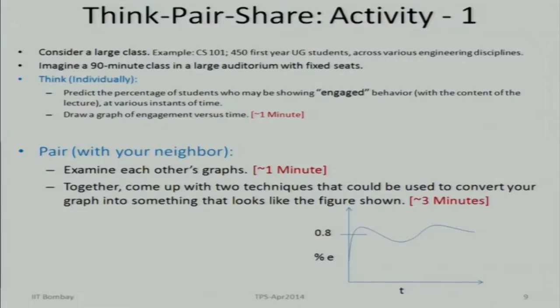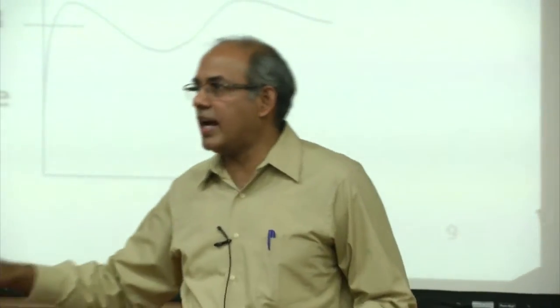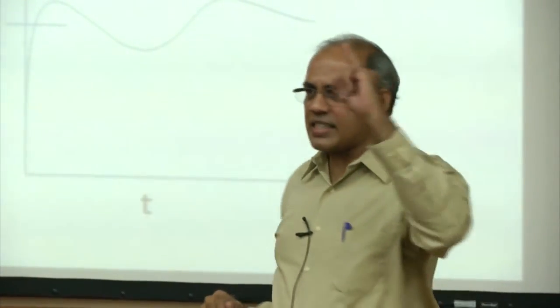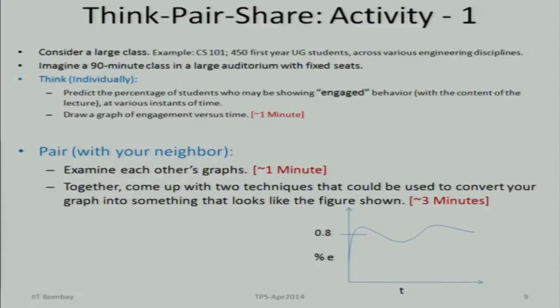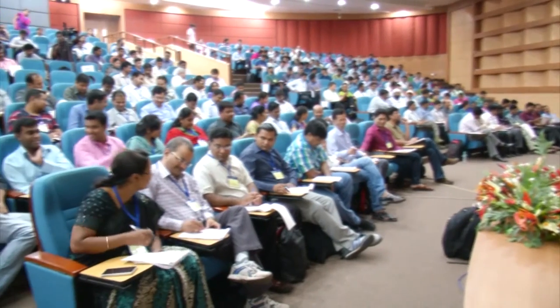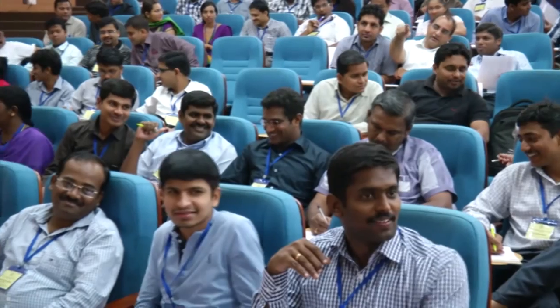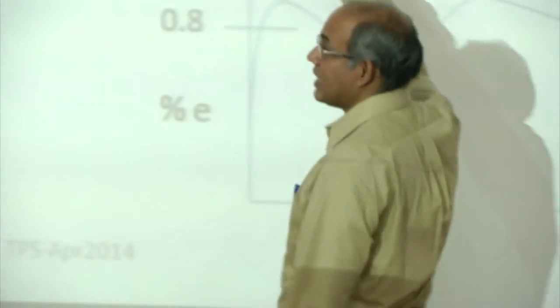Okay, that's the think phase — you've done your own thinking about how the graph of students' engagement versus time is going to look. Now let's move to the next phase. Whoever is sitting next to you — right side, left side, no rule — examine each other's graphs: what was your thinking that led to your graph? What was your neighbor's thinking that led to their graph? Step two: come up with an idea by which 80 percent of students are engaged for 80 percent of the time.